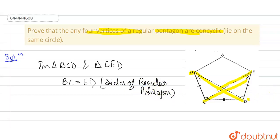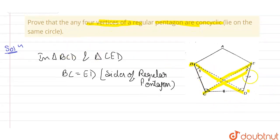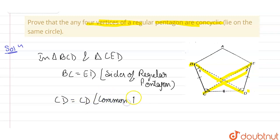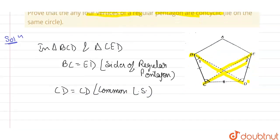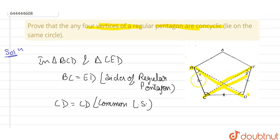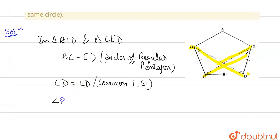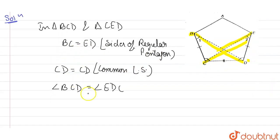Looking at the pentagon figure again, we can also see that angle BCD equals angle EDC, because in a regular pentagon every angle is equal to every other angle. So angle BCD equals angle EDC. Since these three properties hold — BC=ED, CD=CD (common), and angle BCD=angle EDC — triangle BCD is congruent to triangle ECD.